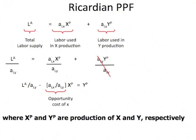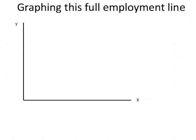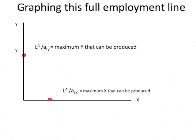If we look at this equation, we'll see that the slope is the familiar ALX over ALY, which we've already seen is the opportunity cost of X in terms of Y. So now we'll actually graph this, where the vertical axis is the amount of Y produced and the horizontal axis is the amount of X produced. The most Y that can be produced is if we took all of the labor in the country and divided it by how many workers it took to produce one unit of Y — that's LA over ALY, and that's the Y intercept.